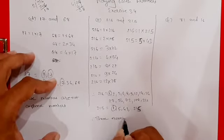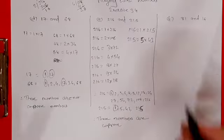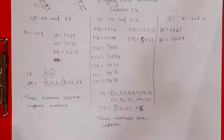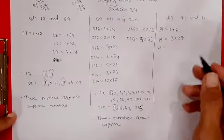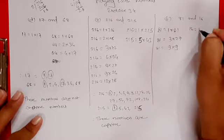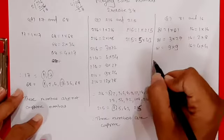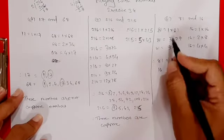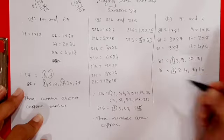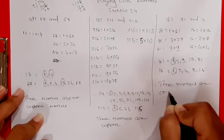Question F: 81 and 16. Factors of 81: 1×81, 2 does not divide, 3×27, 4 does not, 5 does not, 6 does not, 9×9 — repeat, stop. Factors of 16: 1×16, 2×8, 3 does not, 4×4 — repeat, stop. Factors of 81: 1, 3, 9, 27, 81. Factors of 16: 1, 2, 4, 8, 16. The only common factor is 1, therefore these numbers are co-prime.